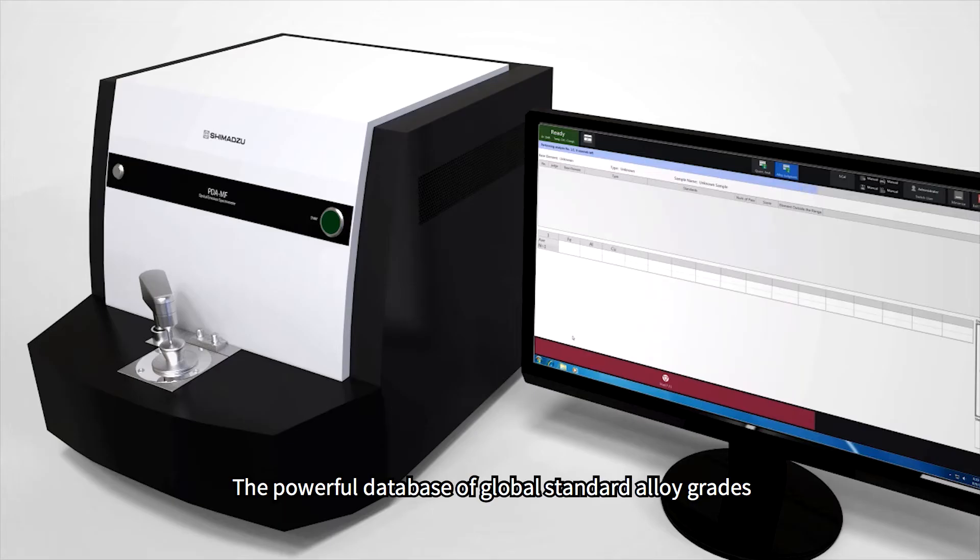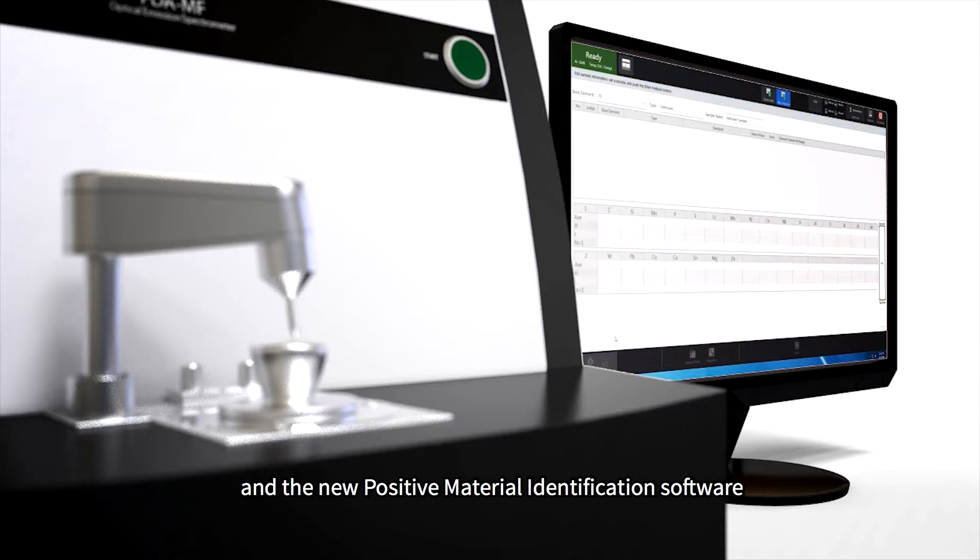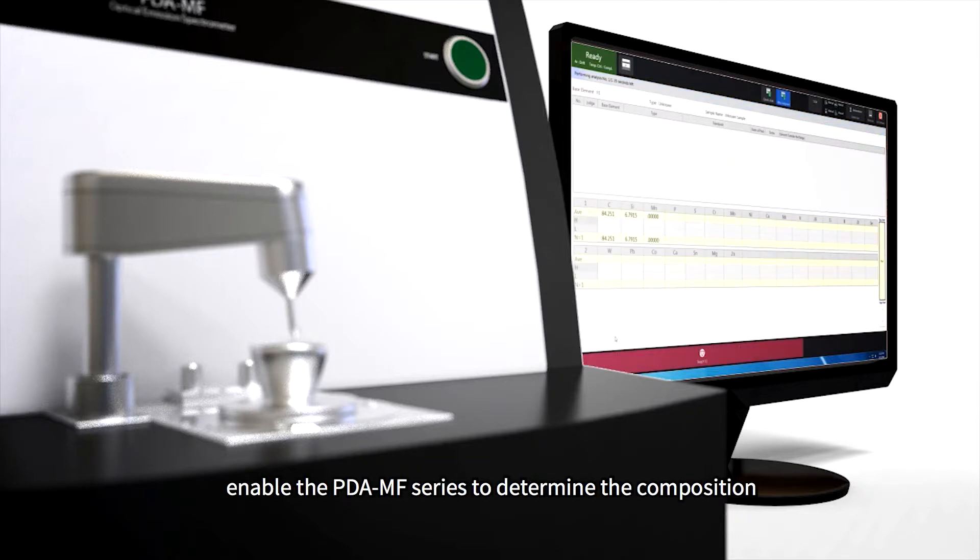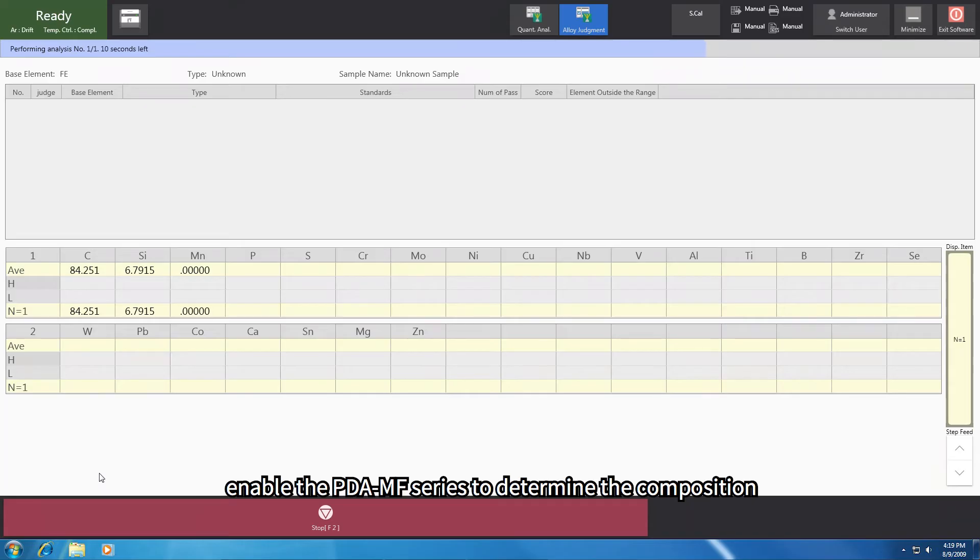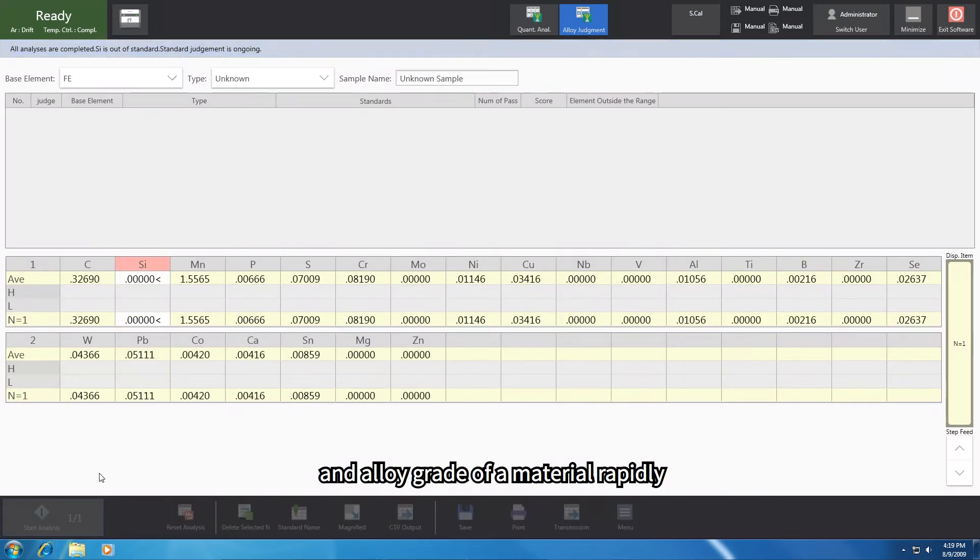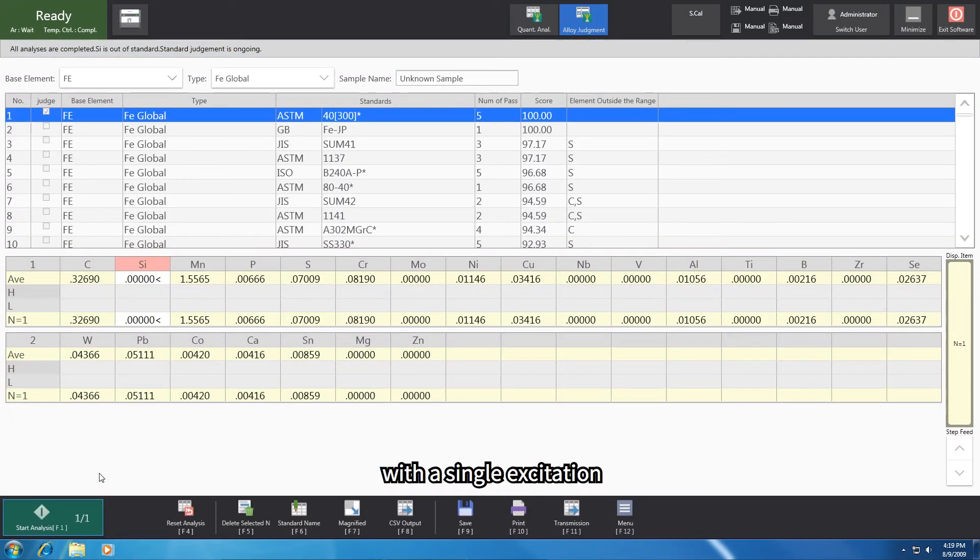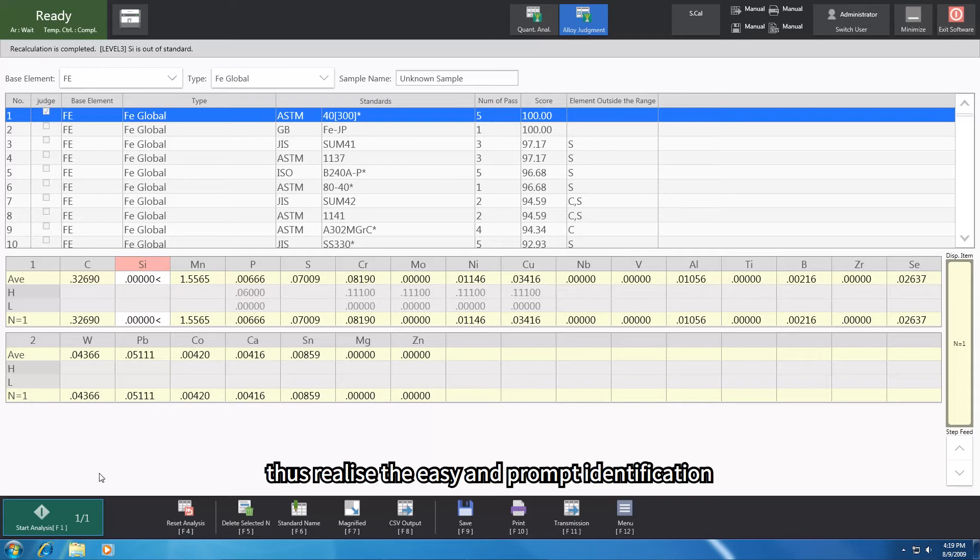The powerful database of global standard alloy grades and the new positive material identification software enable the PDAMF series to determine the composition and alloy grade of a material rapidly, with a single excitation. Thus realize the easy and prompt identification and analysis of unknown samples.